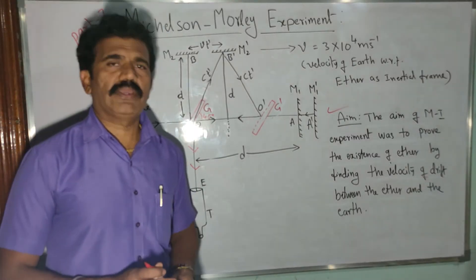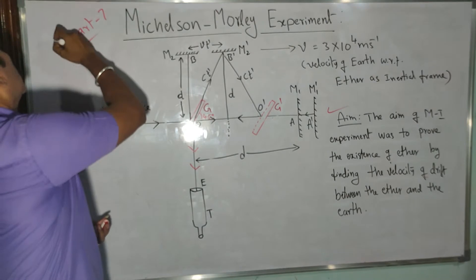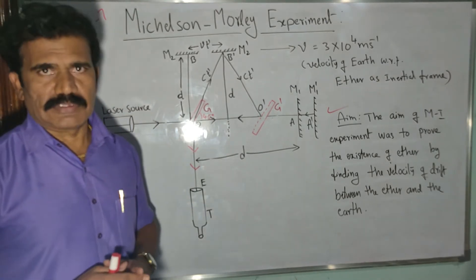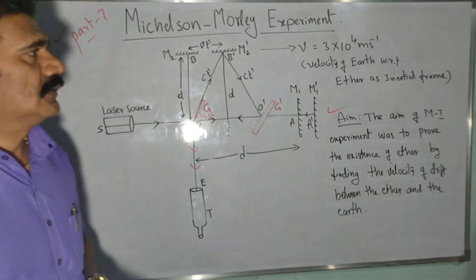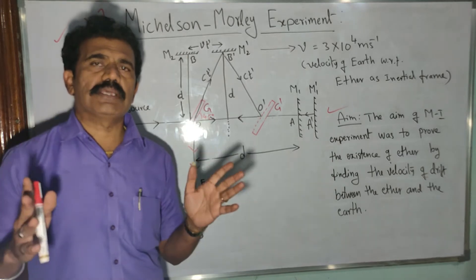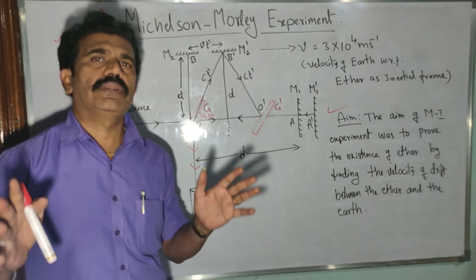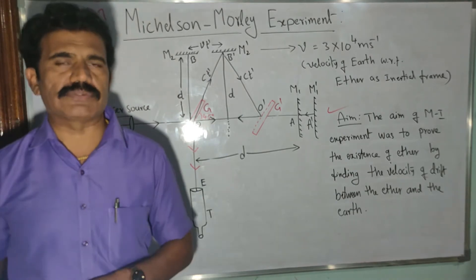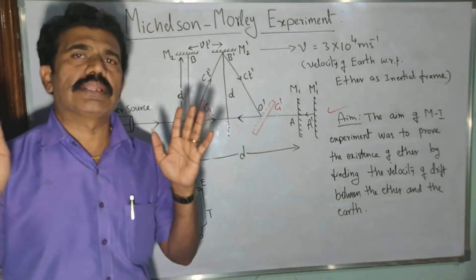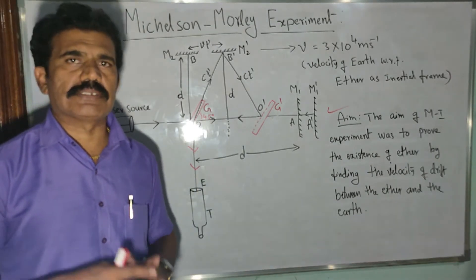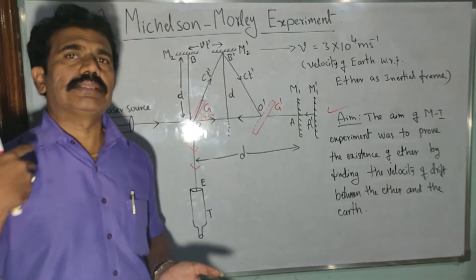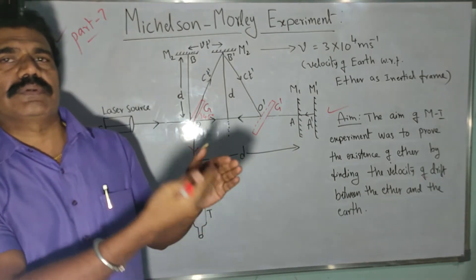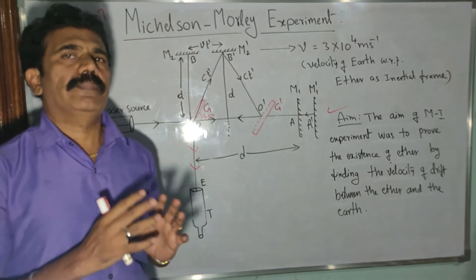Hello students, welcome back to video part number seven. In the last video we discussed the ether hypothesis — what it is, and how it is a kind of medium in space through which all celestial bodies are moving. We discussed some properties of ether: it is a constraint medium that gives no resistance to the motion of celestial bodies, and you have to consider the motion of all celestial bodies with respect to ether as an inertial frame.